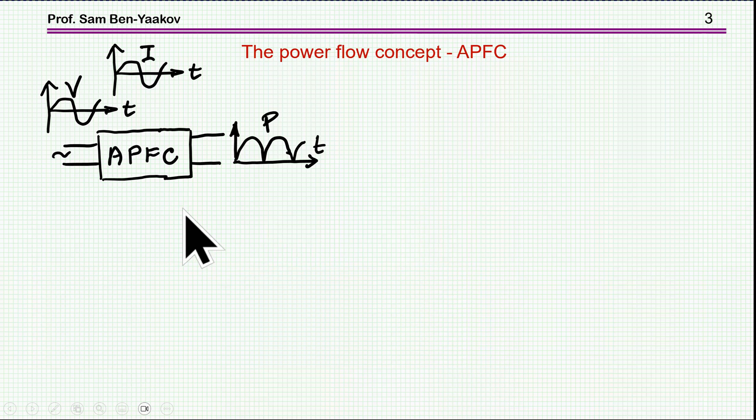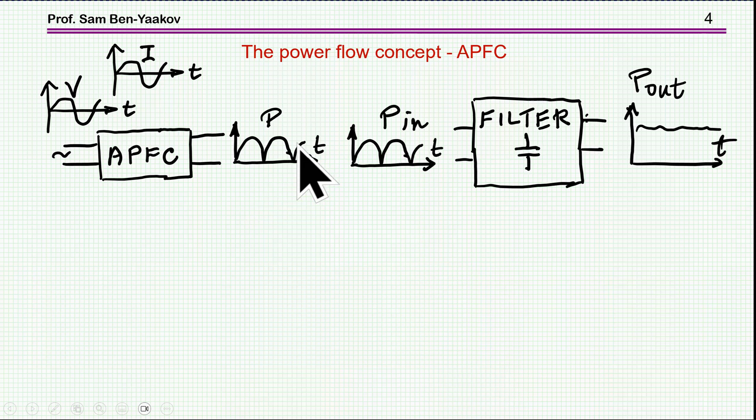Let's have an example to sort of clarify this point. Here I have an active power factor correction front end. The input is voltage, and the current is now shaped by the APFC to be of a sinusoidal waveform in phase with the voltage. And consequently, the output power coming out of this block is pulsating. It's sine squared, as a matter of fact, because two sine, you multiply them. And it's pulsating. On the other hand, you have a load which needs a constant power.